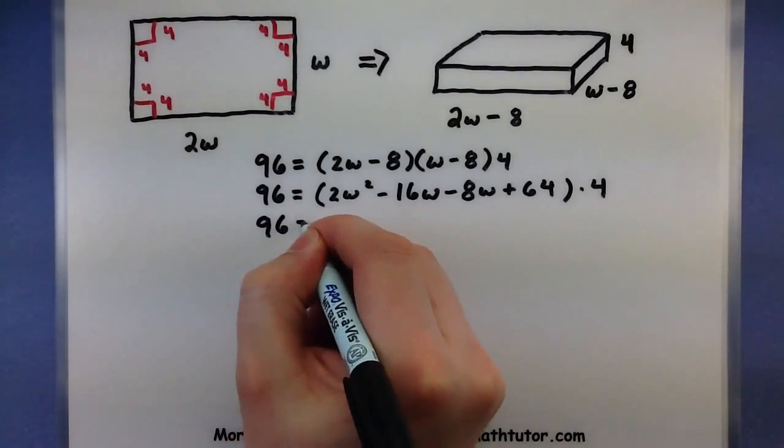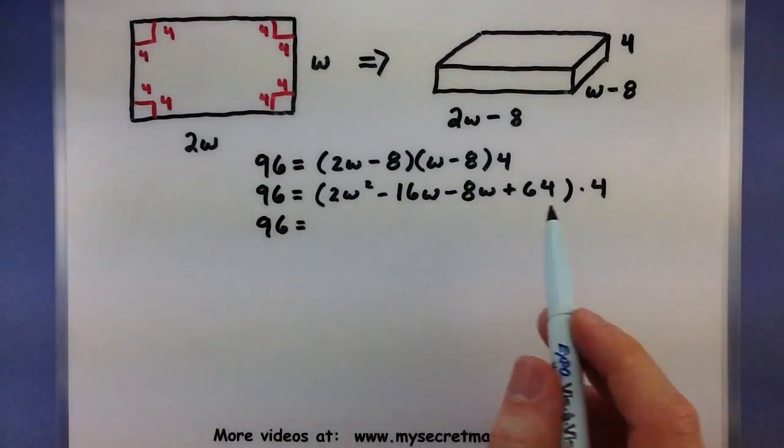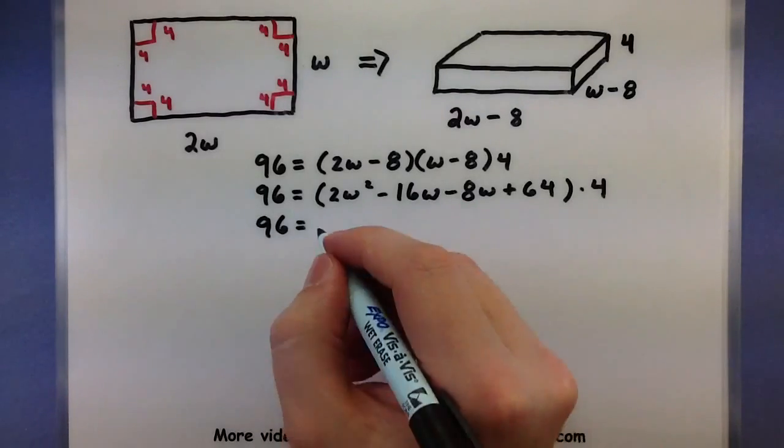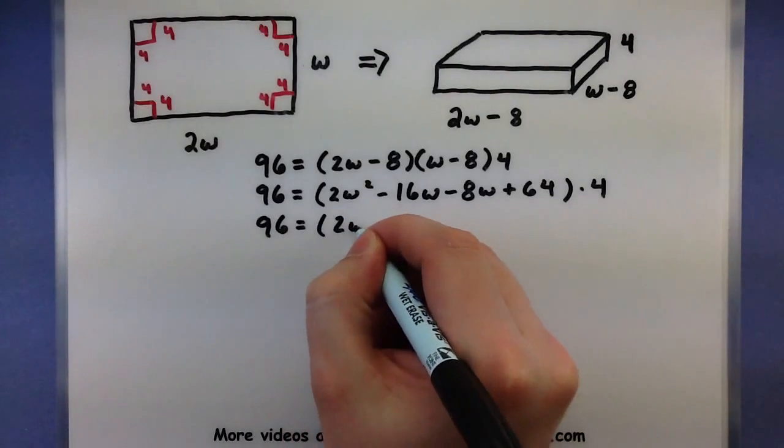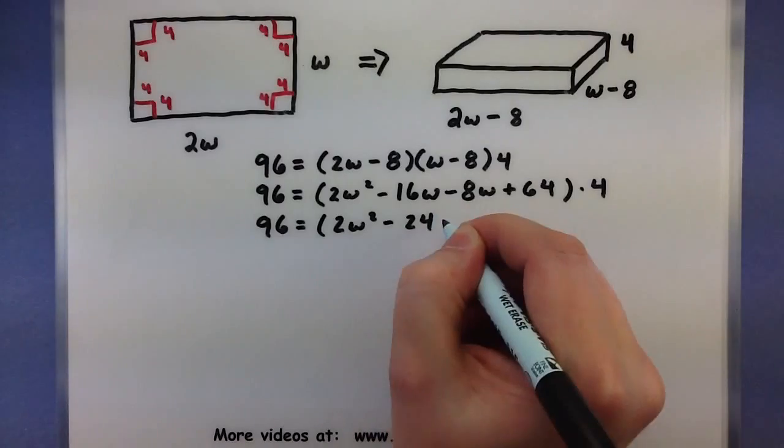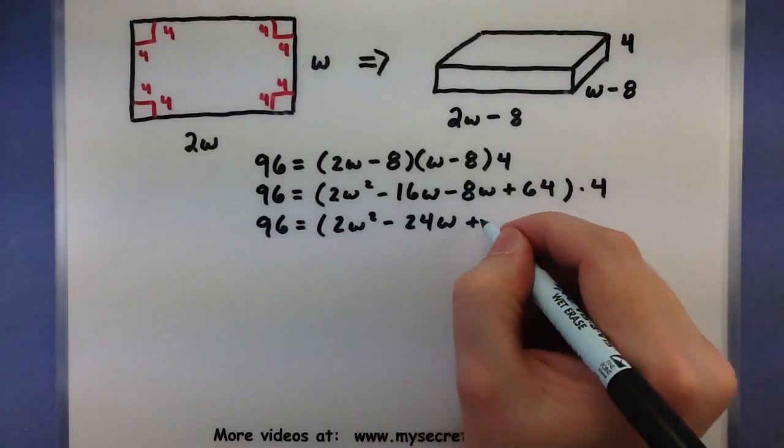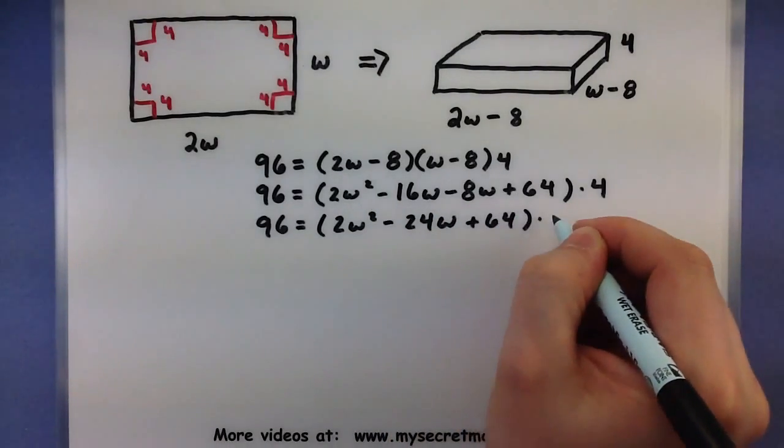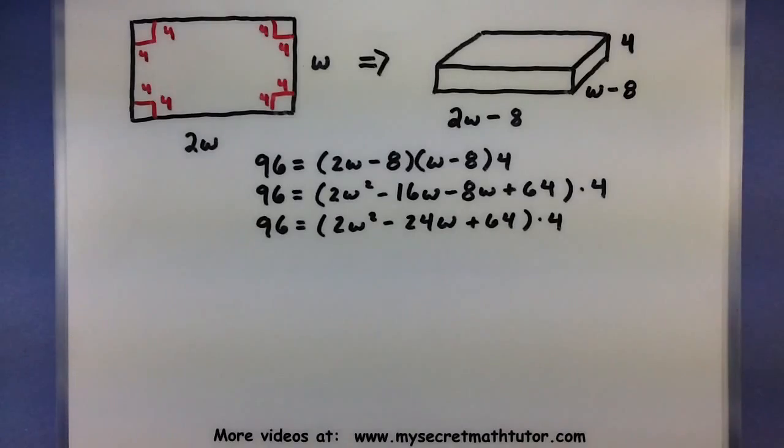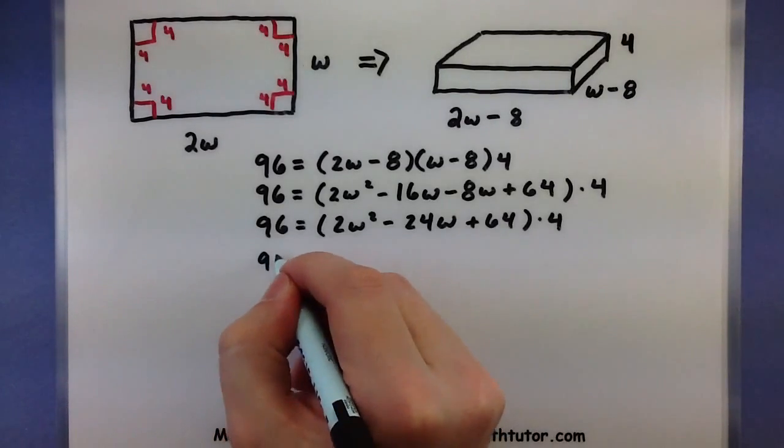Alright, let's keep going. Let's go ahead and combine the 16 and the 8. So 2W squared minus 24W plus 64 times 4.